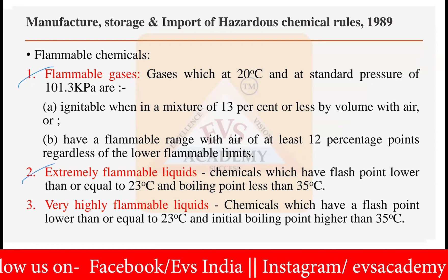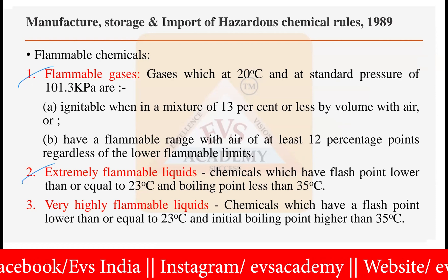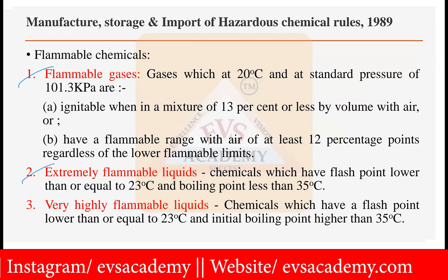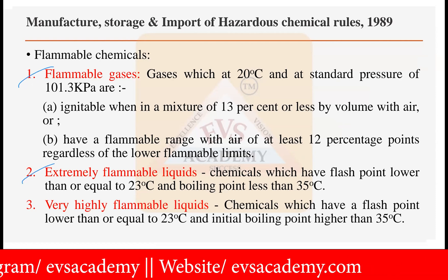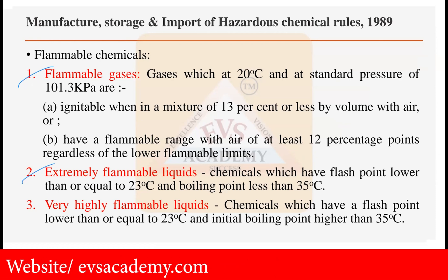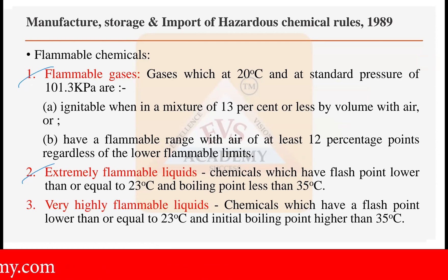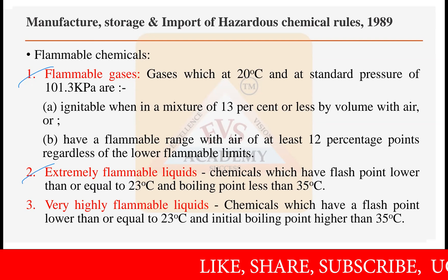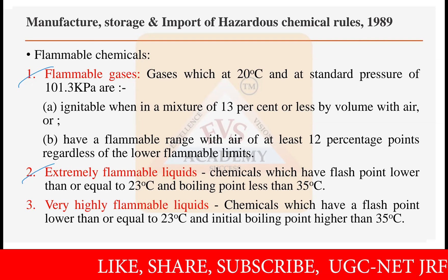Then we have very highly flammable liquids. After extremely flammable, the next category is very highly flammable liquids, which also have a flash point equal to 23 degrees Celsius, but the boiling point is higher — more than 35 degrees Celsius. In the previous category it was less than 35 degrees Celsius.